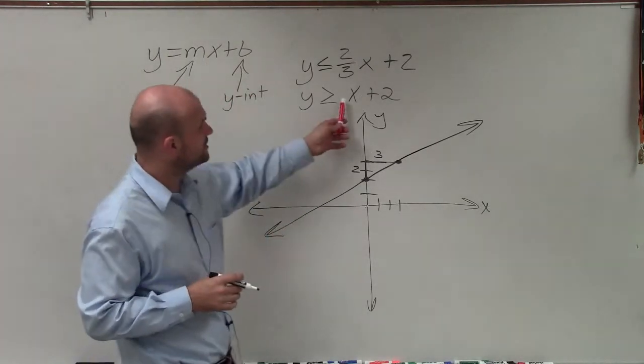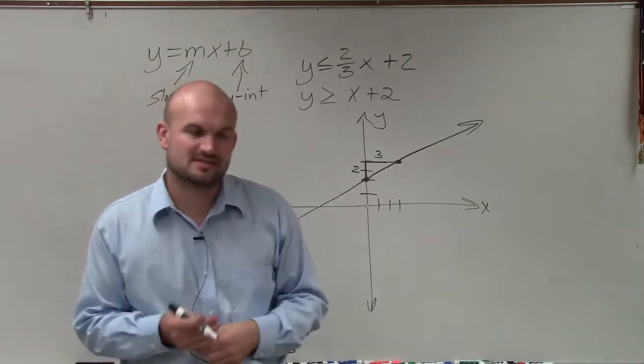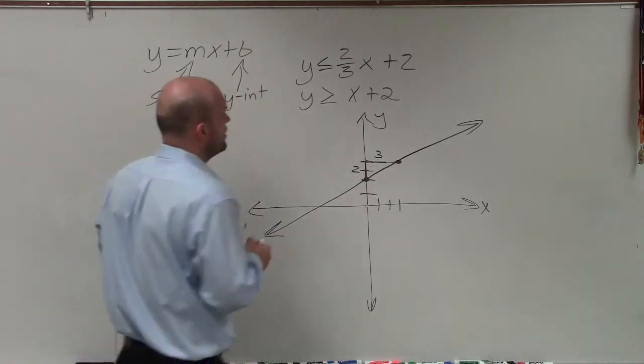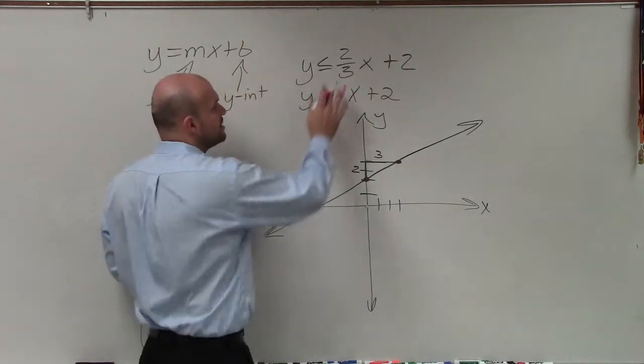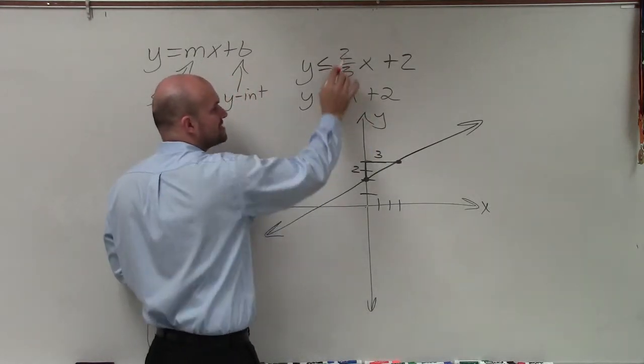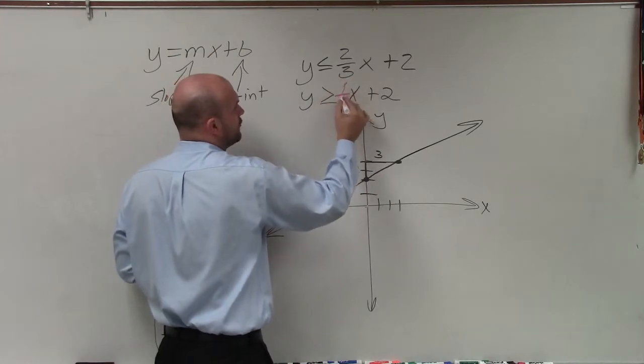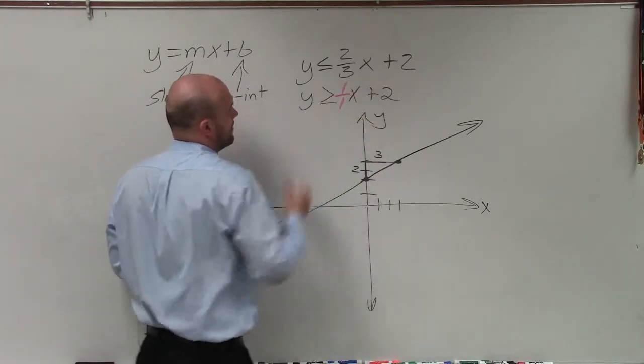All right. Now let's work on the next one. This one, you could see, there's no number in front of x. So when we don't have a number in front of x, we know that we can always say that number is really 1. And we always want to represent our slope as a fraction. So I'm going to rewrite this as 1 over 1.